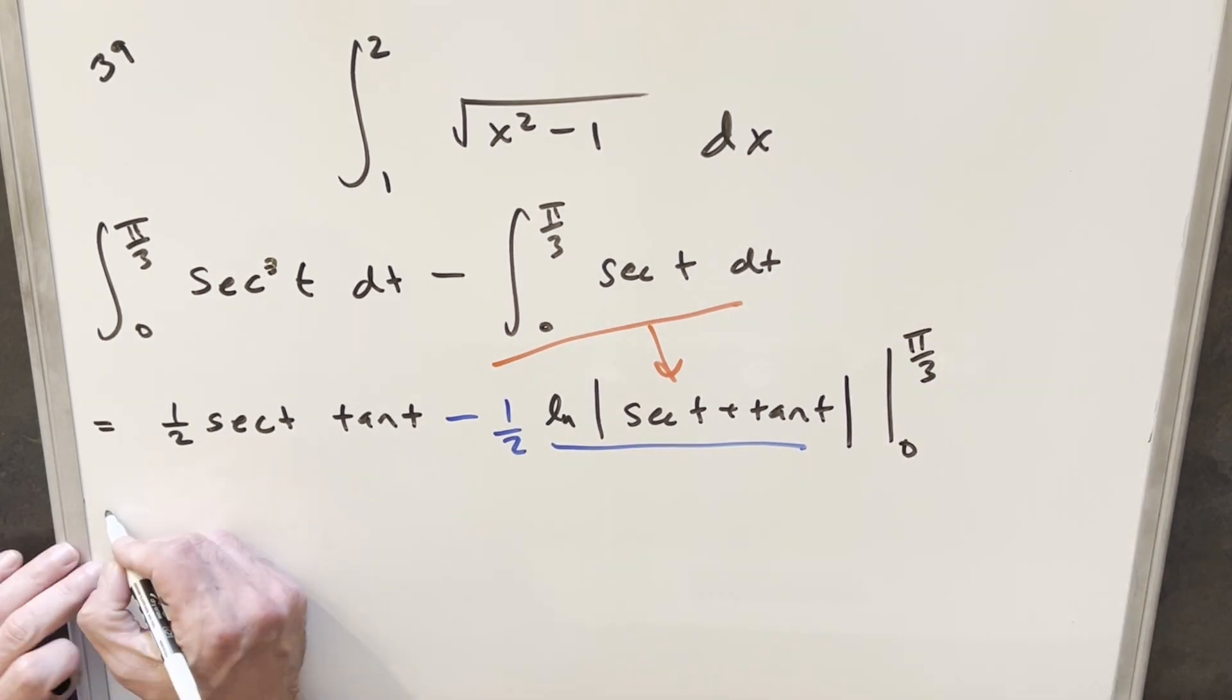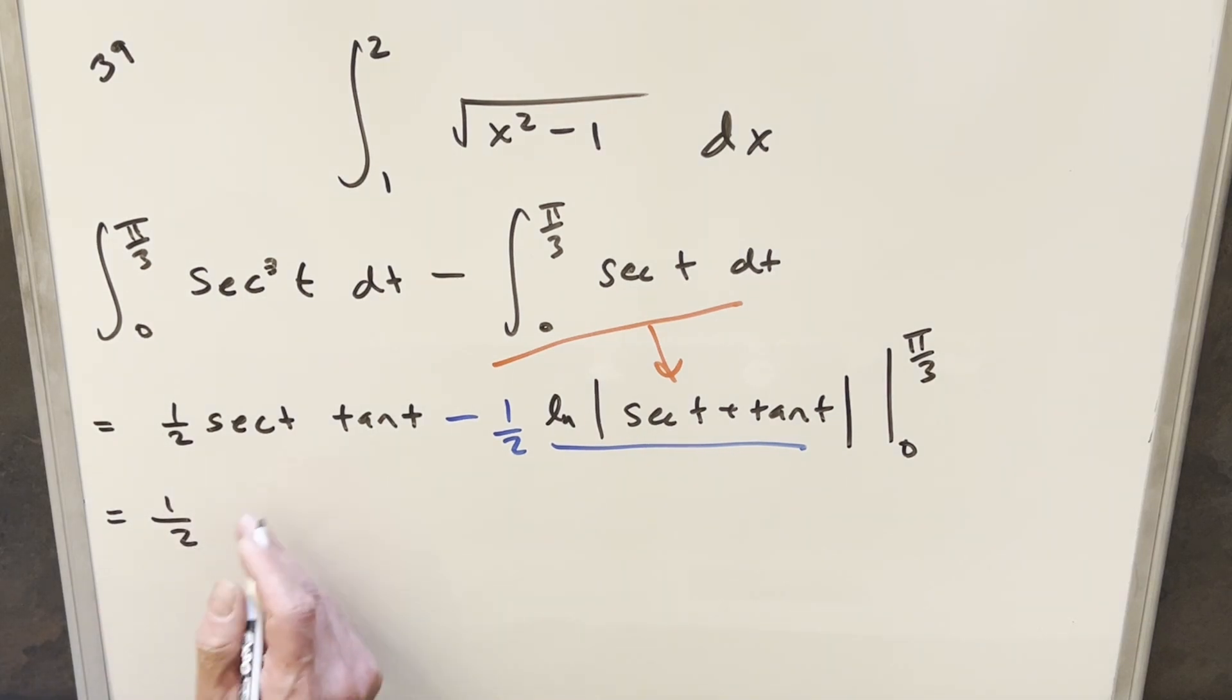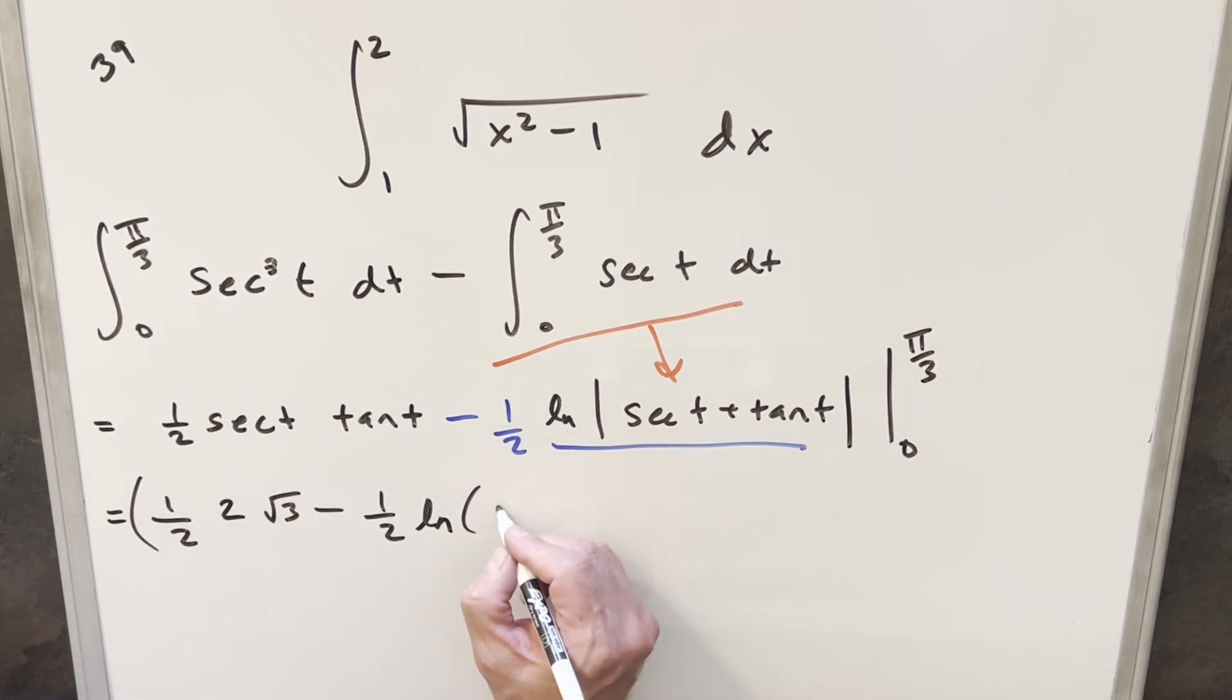Then first evaluating this at pi over 3, we have our 1 half in front. We did this earlier on pi over 3. This was actually just 2. And then tan of pi over 3, that's going to be square root of 3. Then here on the natural log, we can drop the absolute value. Everything's positive. And we just have the same values again that we had right here. So this is going to become 2 plus square root of 3.